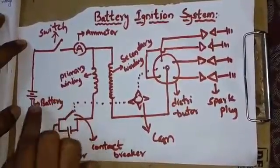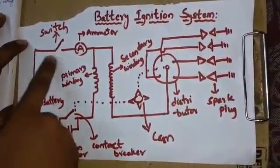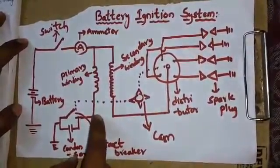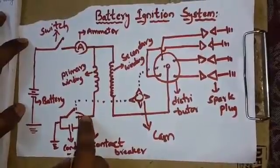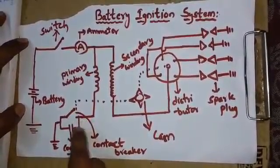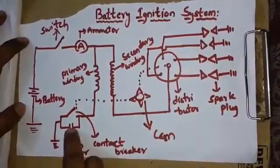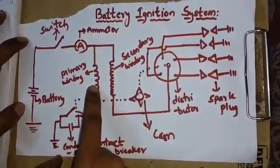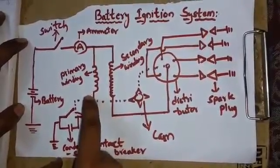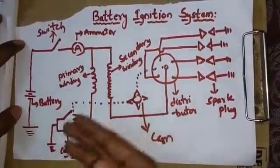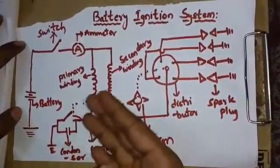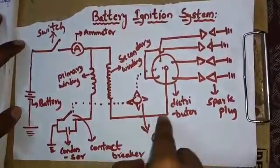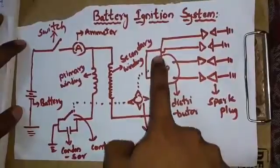When the switch is on, current passes through the battery, through the ammeter, and then goes to the primary winding. When the contact plate opens, it goes through the contact breaker and the condenser. When the condenser voltage becomes higher than the battery voltage, the current in the primary winding falls down and the magnetic field also falls down. Then, reversing the direction and magnitude of current, the current flows through the secondary winding and is distributed to the distributor.